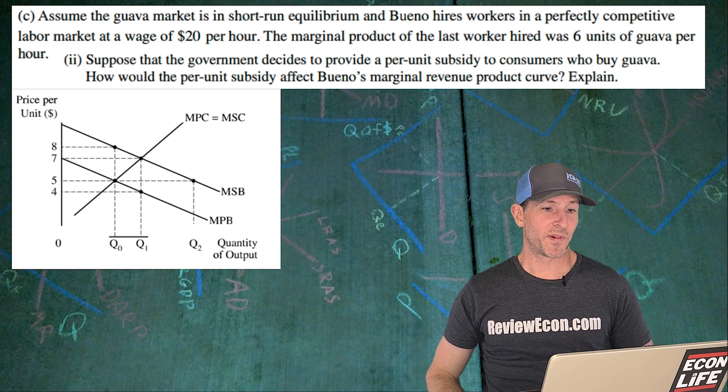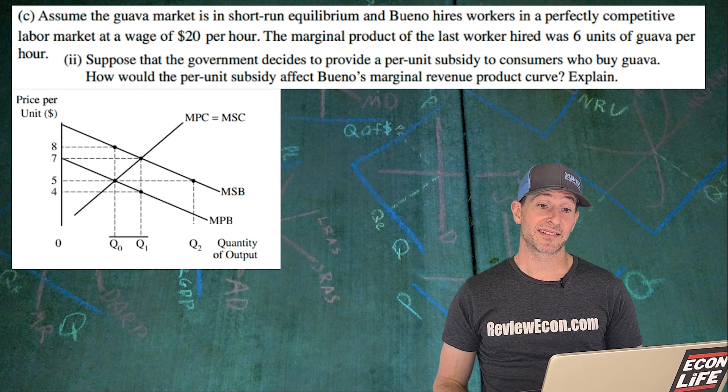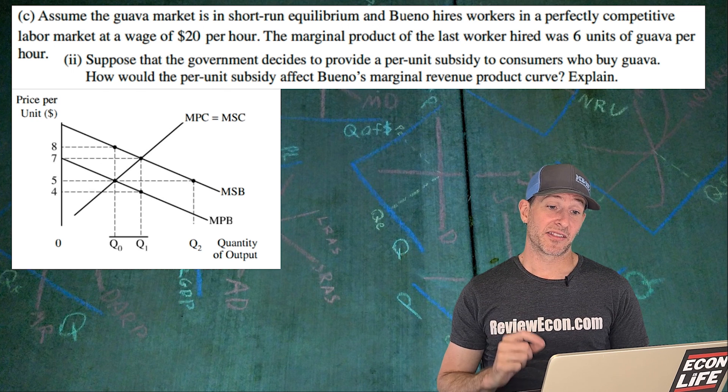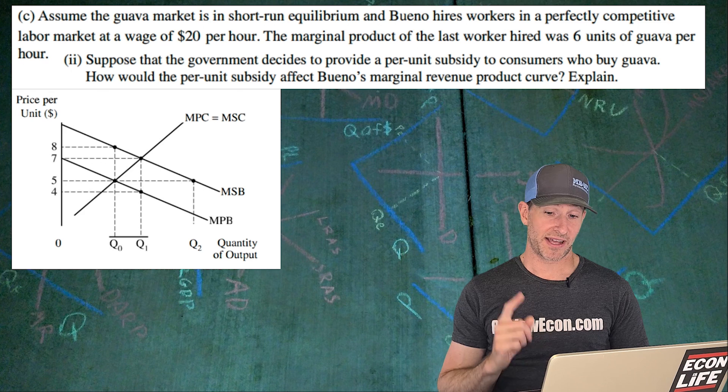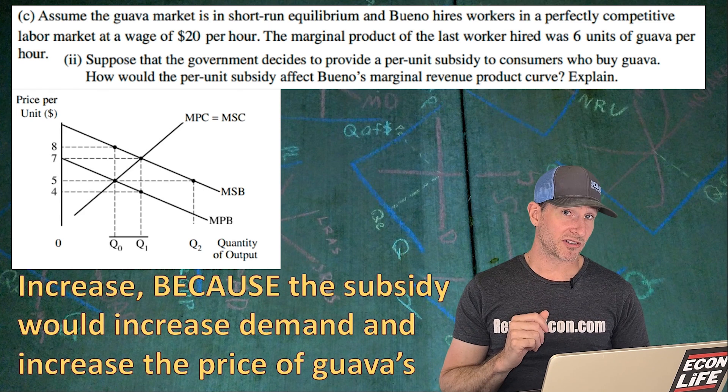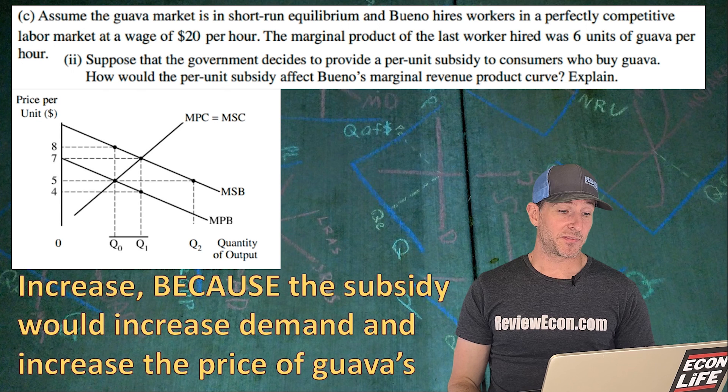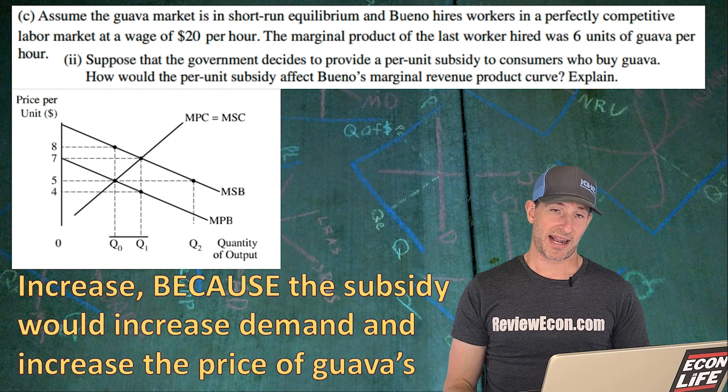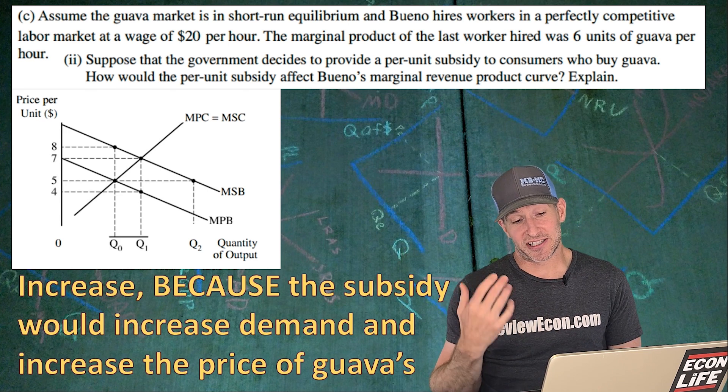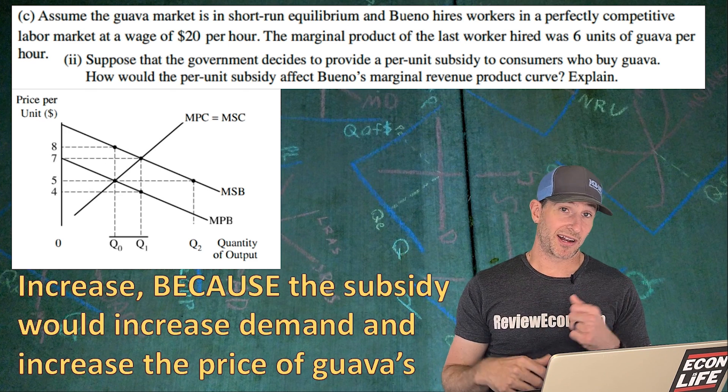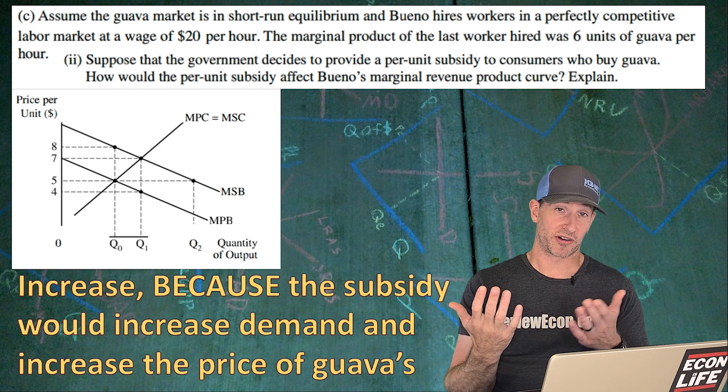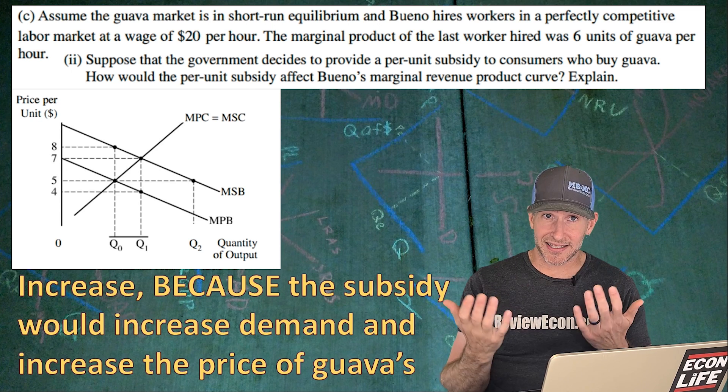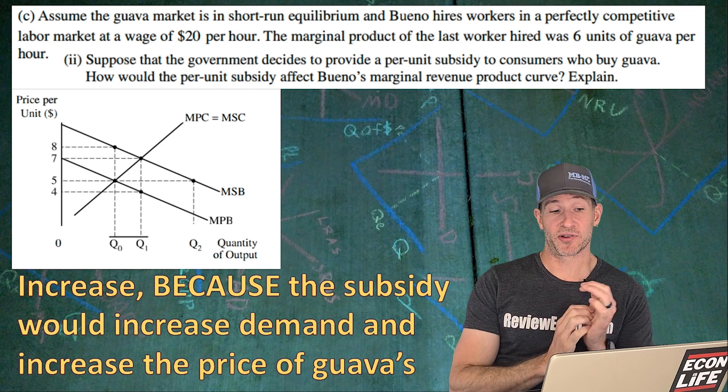On to the next part. Suppose that the government decides to provide a per unit subsidy to consumers who buy guava. How would that per unit subsidy affect the Bueno's marginal revenue product curve and explain? So it's going to increase that marginal revenue product curve or shift it to the right. And that's because the subsidy would actually increase demand for the price for the product, and therefore increase the price of guavas. And remember marginal revenue product is the marginal product, which wouldn't change for the workers that are being hired, but we are now multiplying by a larger price of guavas here as a result of the demand curve shifting to the right. That would give us a higher price.